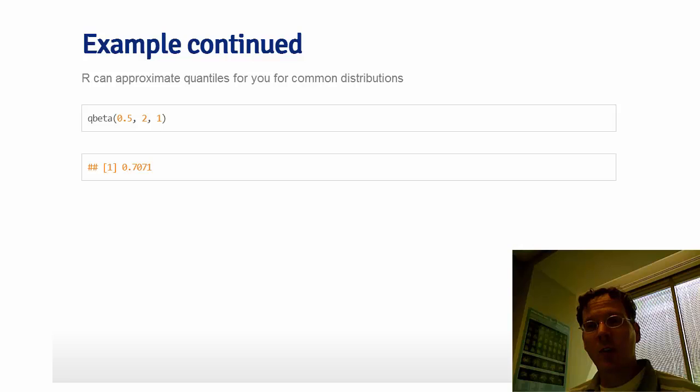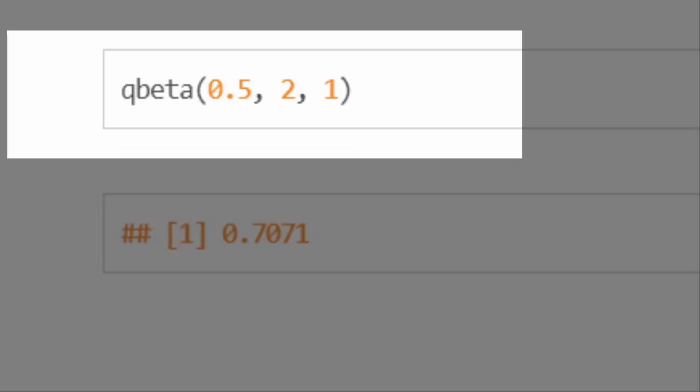We work with quantiles a lot, especially from the normal distribution. We almost never go through the process of working directly with densities to calculate quantiles, because the distributions we use are common and this has already been done for us. In R, q in front of the density function name gives the quantiles. So q-beta gives us the relevant quantile. Here we plug in 0.5 — R takes the quantile argument as a proportion, not a percent. The parameters 2 and 1 yield the specific beta density we are looking at, and we get 0.71, exactly as before.